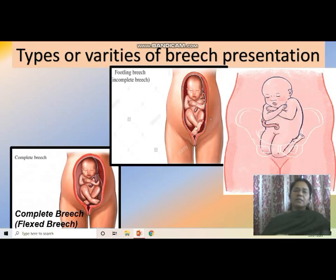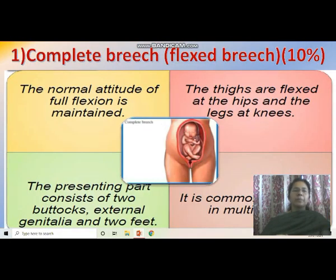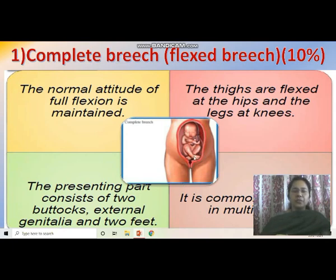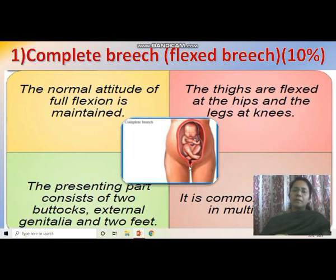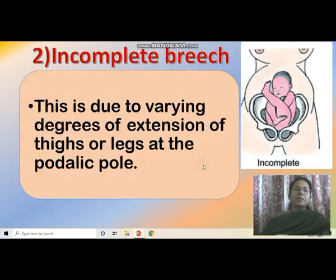In complete breech, or flexed breech presentation, the normal attitude of full flexion is maintained. The presenting part consists of two buttocks, external genitalia and two feet. The thighs are flexed at the hips and the legs are at the knees. It is common in the multiparous woman.